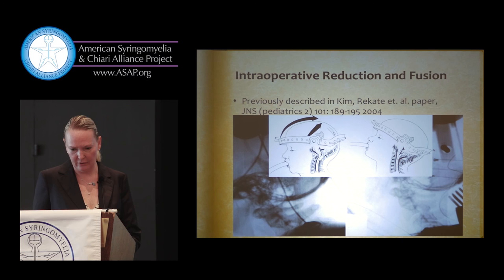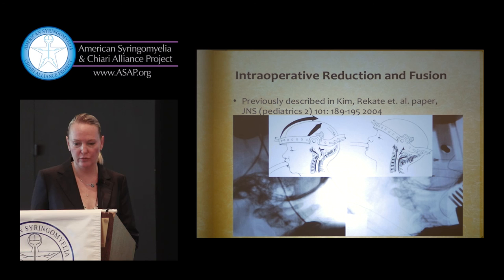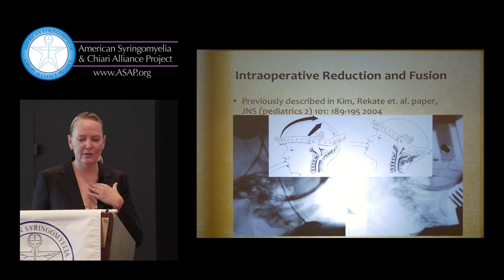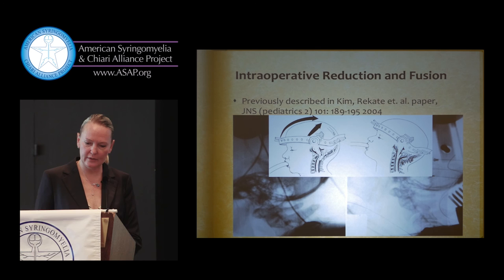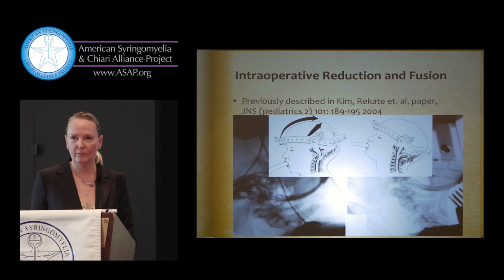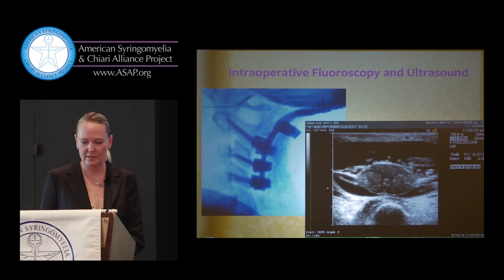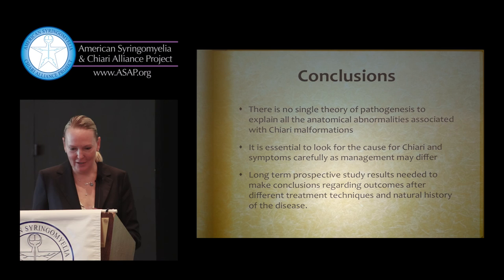Dr. Reghate wrote a lot of papers about intraoperatively reducing the compression to the brainstem. Previously these were treated with a procedure called an odontoidectomy done from the front, then requiring another surgery from the back. Dr. Reghate's technique allows you to take the anterior compression off by disconnecting everything and then intraoperatively reducing the compression off the brainstem — all done with intraoperative fluoroscopy and ultrasound to confirm the result, where you can see the dens is off the brainstem. There are going to be people talking more about this this weekend.